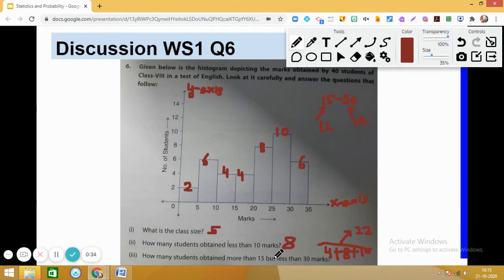Very simple. We just need to see the class interval 30 to 35. The answer is 6. Okay, quickly answer one more question. How many students got marks from 20 to 25? Answer is 8. Very good. So this is how we read a histogram.